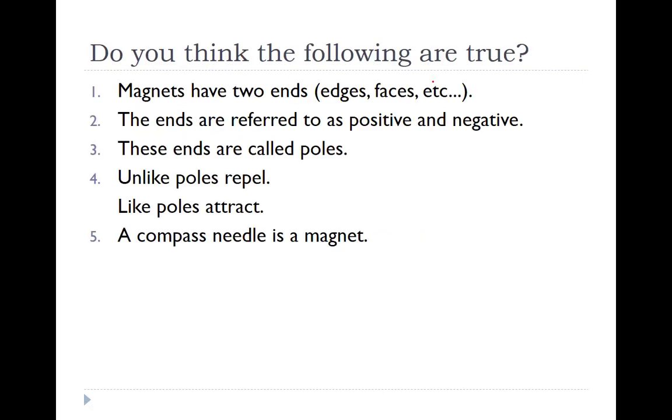So magnets have two ends. Yes, they have at least two ends. They could have four, they could have six, they could have eight. But they always appear in pairs. The ends are referred to as positive and negative. No, they are the north and south poles. Unlike poles repel. No, like poles repel. And unlike poles attract. So this comes back to opposites attract, likes repel. And a compass needle is a magnet. Yes, it is.